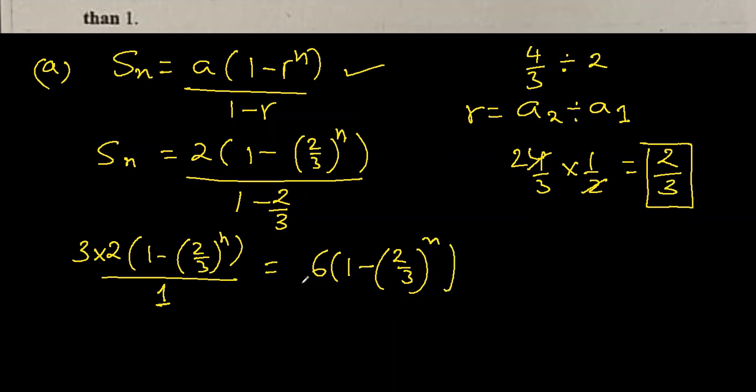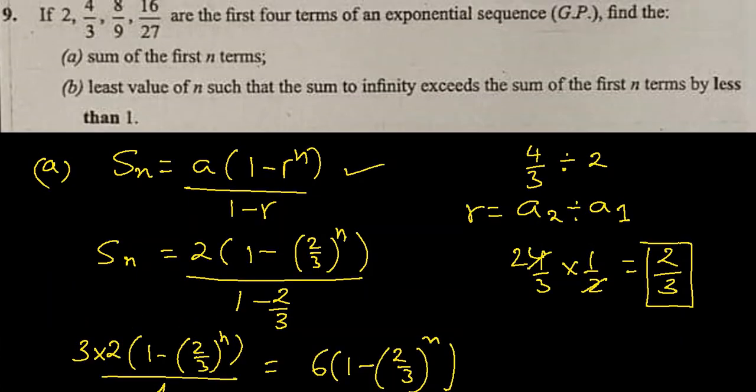So sum to infinity is more. Part (b): sum to infinity will be a/(1-r), so which is 2/(1-2/3).